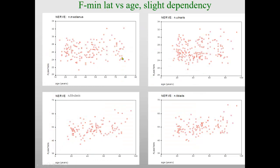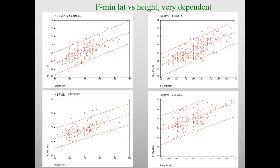Minimum latency for the different nerves — median, ulnar, fibular, and tibial nerve — are not very much dependent on age. It is like a nerve conduction study when we talk about older people, a slight tendency maybe. But when it comes to dependency on height, it is very pronounced naturally because we record only latency and do not recalculate that into some kind of pseudo-velocity.